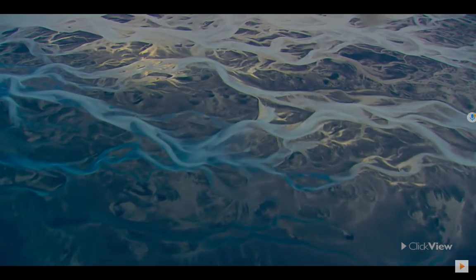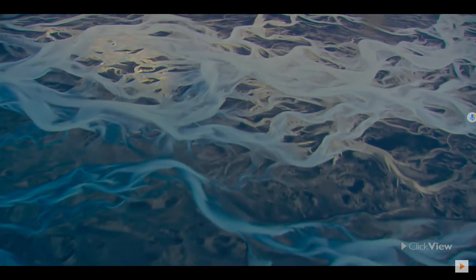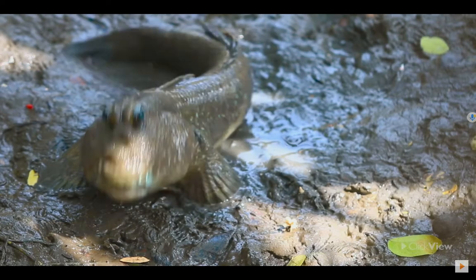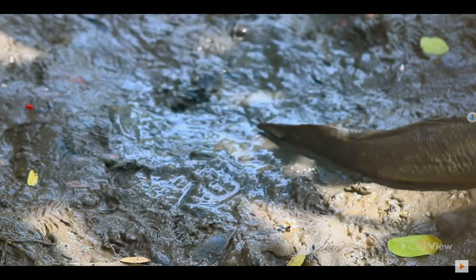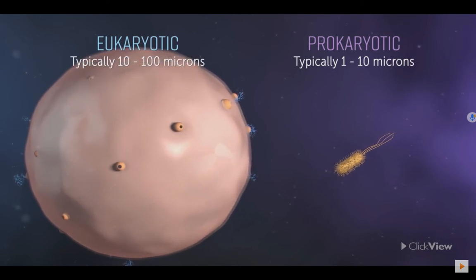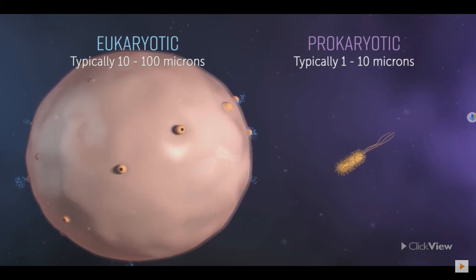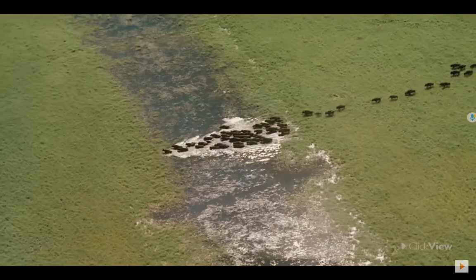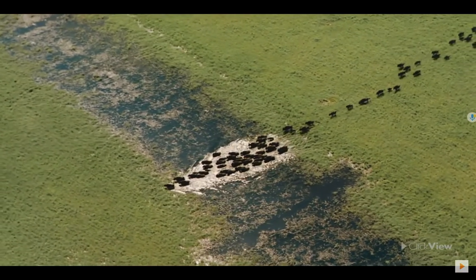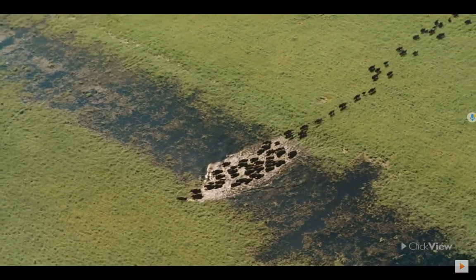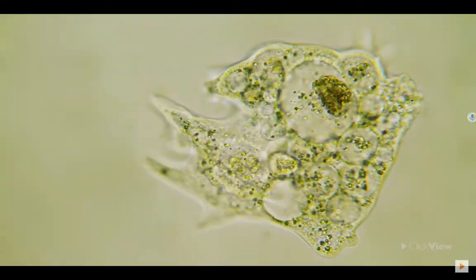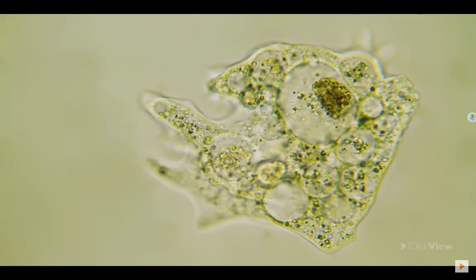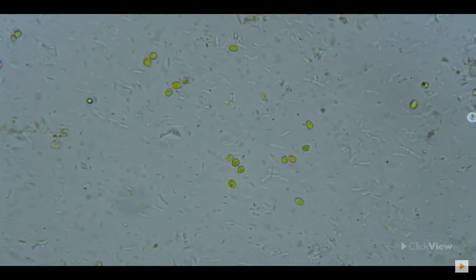For millions of years, prokaryotes were the only form of life on this planet. Eukaryotes came later, as a result of the process of evolution. Another difference between eukaryotic and prokaryotic cells is their size. Eukaryotic cells are generally larger than prokaryotic cells. Eukaryotes are mostly, although not entirely, multicellular organisms, whereas prokaryotes are always single-celled or unicellular organisms. Examples of unicellular eukaryotes include amoebas, paramecium, and yeast.